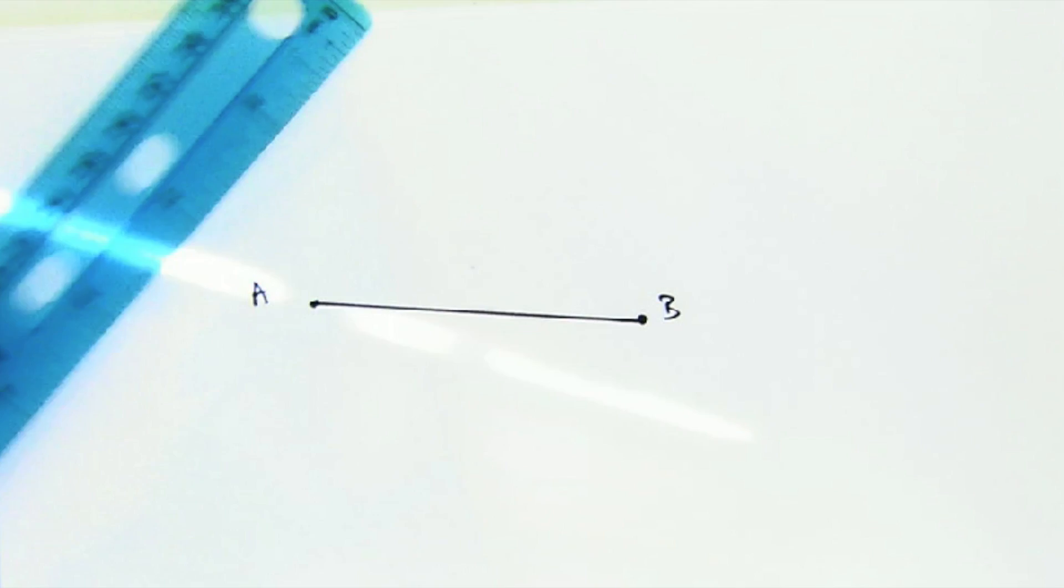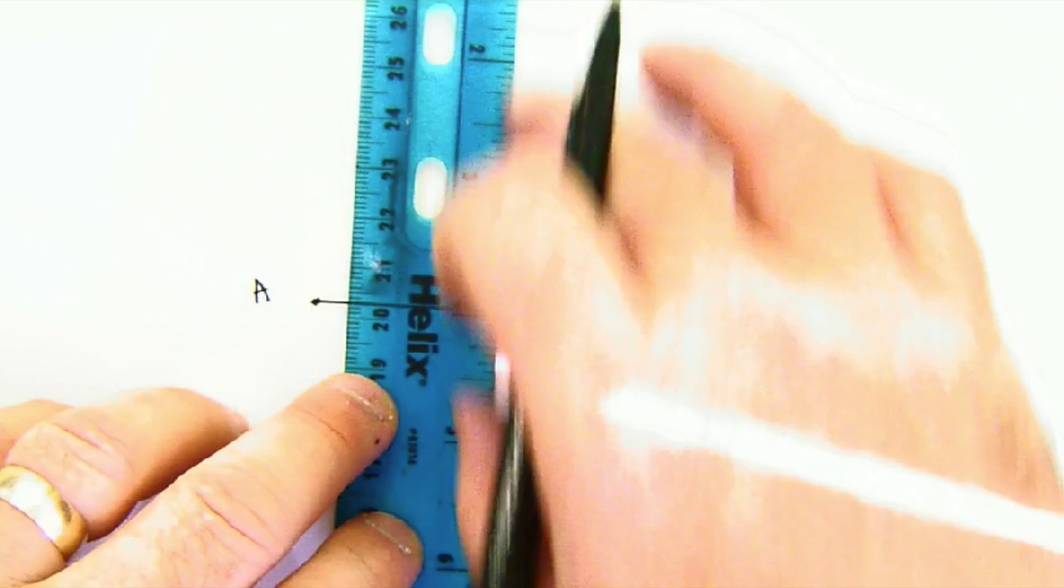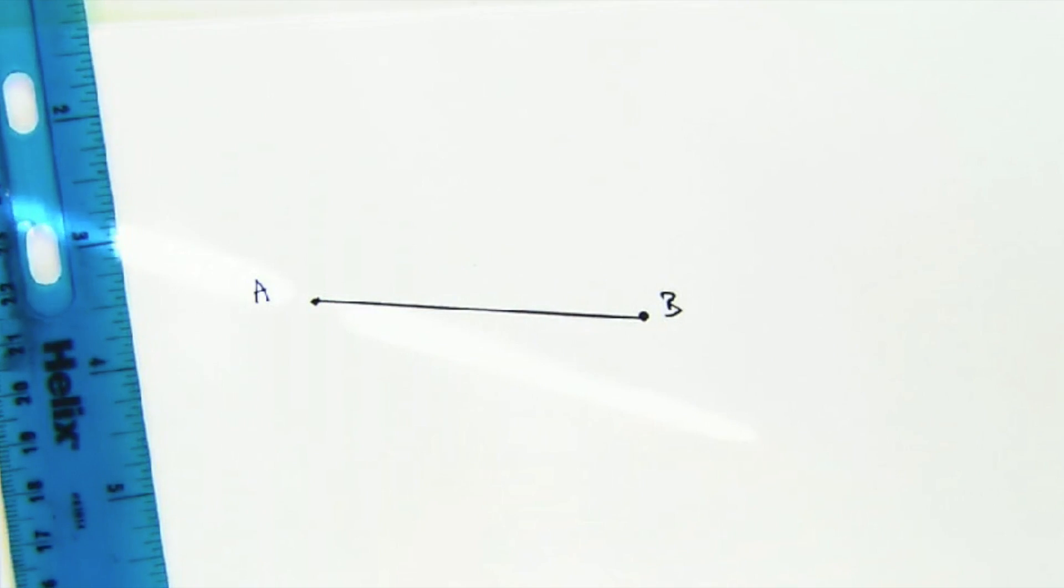And now we're looking for the line that bisects it, means cuts it in half, and is perpendicular. Now this construction is based off of what I call the midpoint construction.